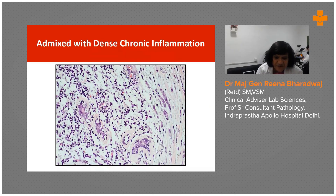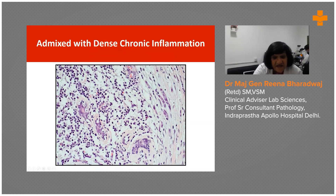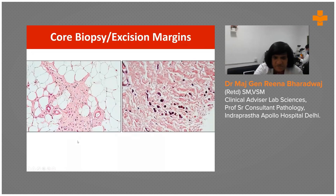Lobular carcinoma can be mixed with inflammation and can be so deceptive and surreptitious that you will not notice them. At the periphery is the lymphoid infiltrate, and the cords of lobular carcinoma hide in between. This is especially important on core or excision biopsy, where large pleomorphic cells can be easily missed if you don't concentrate.